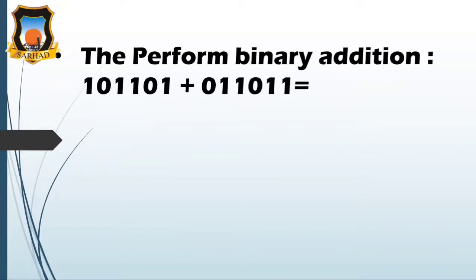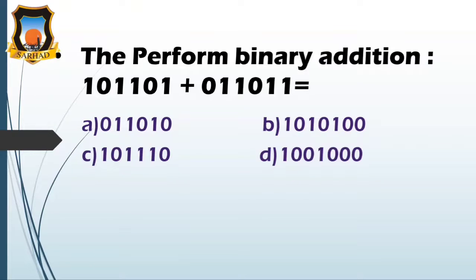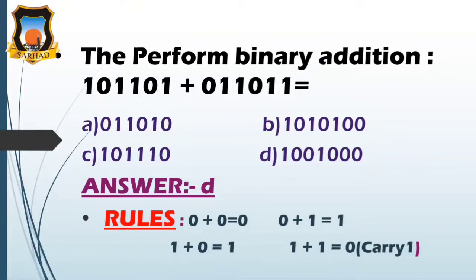Next question: perform binary addition 101101 plus 011011 equals - the options are here, and the correct answer is D, that is 1001000, by the rules of binary addition. As we all know, 0 plus 0 equals 0, 0 plus 1 is equal to 1, 1 plus 0 equals 1, and 1 plus 1 equals 0 and the carry is 1.